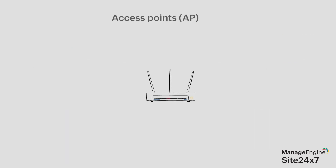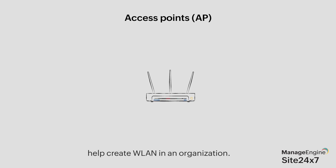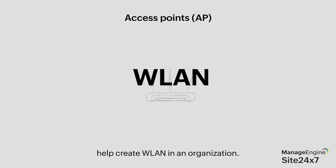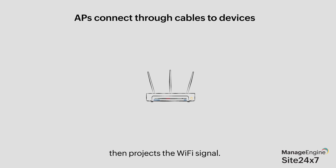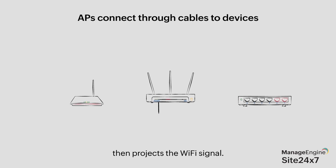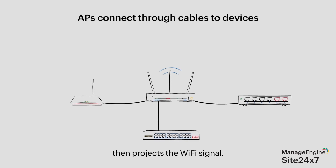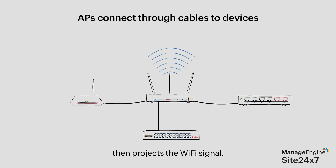Coming up next are access points. These are advanced devices that help create a WLAN in an organization. They typically connect through cables to routers, hubs, or switches and then project the Wi-Fi signals over a particular area.